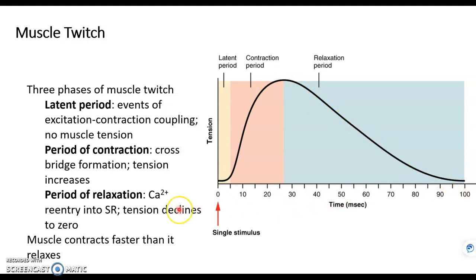So what our body can do is take advantage of this long relaxation period in order to produce another muscle contraction before it gets completely to rest, which will produce a stronger contraction. So let's see how that happens.